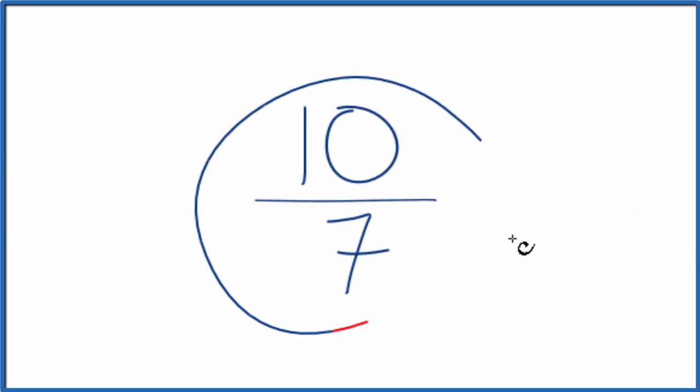Let's simplify the fraction 10 sevenths, and here's how we do it. We want to find another fraction that's equivalent, has the same value as 10 over 7, just that we've simplified or reduced it down to its lowest terms.